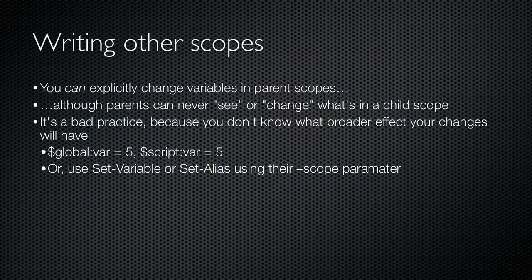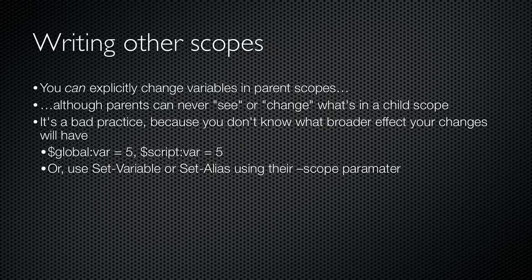Now it is possible to explicitly change the values of variables in other scopes. A child can write to its parent scopes, but never to its own children or to siblings. This is a very poor practice though, because when your script runs at different times or on different computers, you can't predict the outcome of modifying parent scopes. However, I want you to know how to do it so that you're aware of the technique and of the danger it presents. One way is to use a special naming syntax. $global: will change an item in the global scope, while $script: will change the next script scope parent. You can also use the various set cmdlets, such as Set-Variable and Set-Alias. These all have a scope parameter, which lets you specify the scope you want to change. Read the full help on these cmdlets for information on how to specify a particular scope.